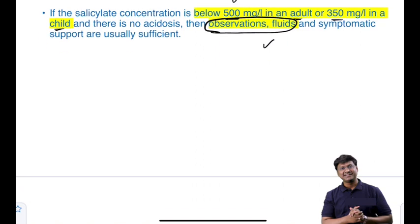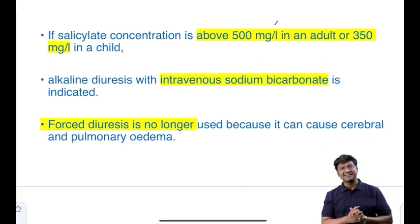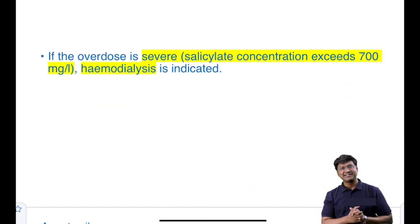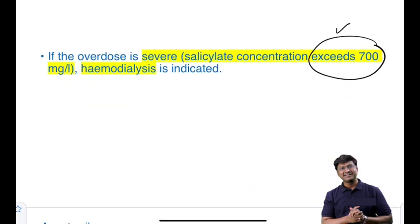When the salicylate concentration is above 500 mg/L in adults, you need to do alkaline diuresis with intravenous sodium bicarbonate. Please remember that for aspirin overdose, forced diuresis is no longer used. If the salicylate concentration is more than 700 mg/L, then hemodialysis is indicated.